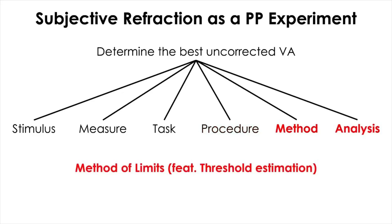The psychophysical method running the experiment is called method of limits, one of the classical psychophysical methods established by Fechner. We will take a detour to look at different psychophysical methods in more detail, considering method and analysis together, because adopting a specific method determines how collected data will be converted into threshold measurements.